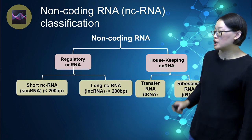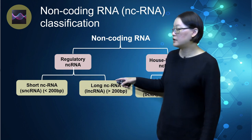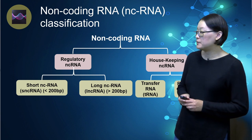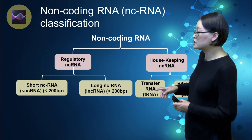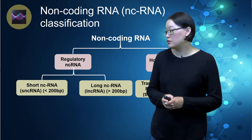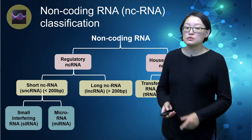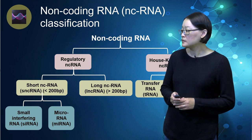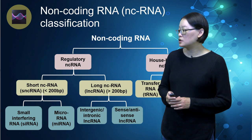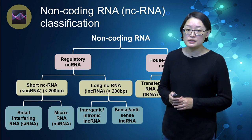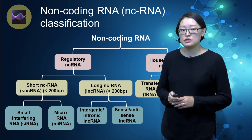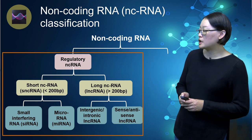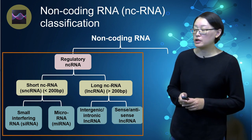Regulatory non-coding RNA can be further divided into short or long non-coding RNA based on size, with short ones usually less than 200 base pairs and long ones greater than 200 base pairs. Housekeeping non-coding RNA includes transfer RNA and ribosomal RNA, both of which are involved in the translation of RNA into proteins. Short non-coding RNA can be further divided into small interfering RNA, or siRNA, and microRNA. Long non-coding RNA can be intergenic, intronic, sense, or antisense, referring to their position relative to the gene and exons in the genome. Today I'll be mainly talking about regulatory non-coding RNA and how they regulate gene expression.